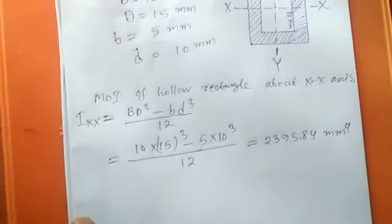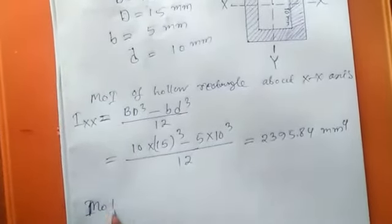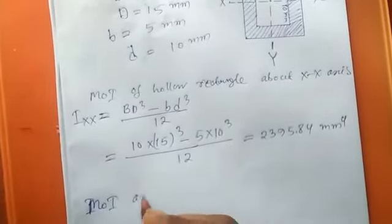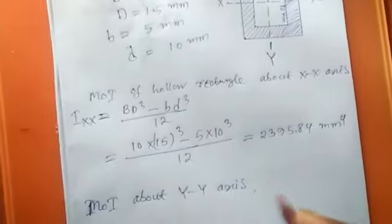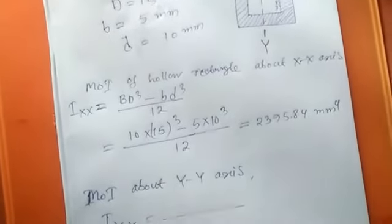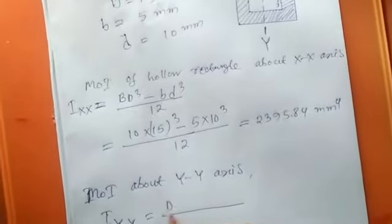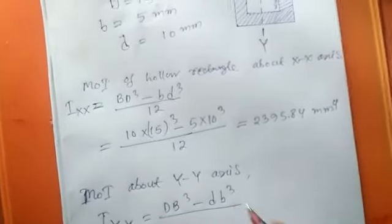And moment of inertia about Y-Y axis, that is denoted by I_yy, is equal to DB³ minus db³ divided by 12.